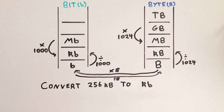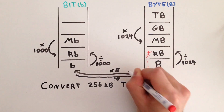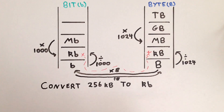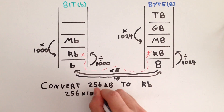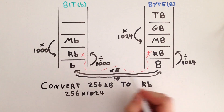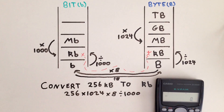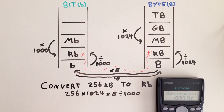And another one: convert 256 kilobytes to kilobits. So we're going from kilobytes, so we're here, and need to go to kilobits, so all the way up there. So we write our number, 256. We need to drop down one level, so we need to multiply by 1024. Then we need to cross over to the bit ladder, so we multiply by eight. And then we just need to go up one level, so divide by a thousand. Let's put that into our calculator: 256 times 1024, times eight, divided by a thousand. And that gives us 2,097 kilobits.